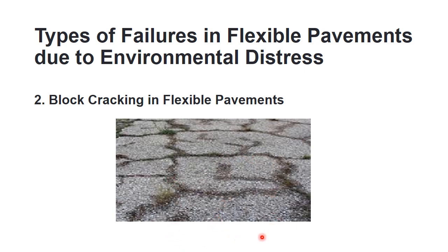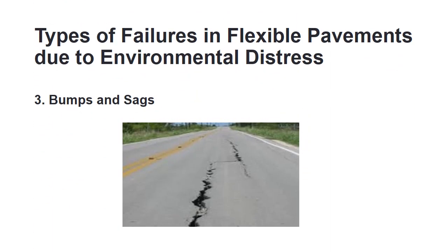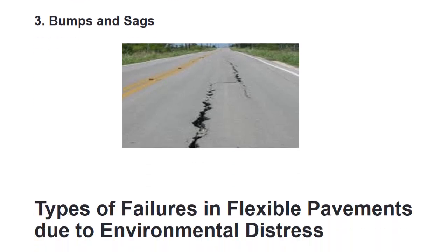The second environmental distress type is block cracking, also called thermal cracking. Cracking happens in the form of blocks, and these interconnected cracks divide the pavement into rectangular pieces. The third type is bumps. A pavement surface that is localized and has undergone an upward displacement is called a bump. These are caused due to instability factors, and can also be caused by buckling or bulging of concrete slabs.